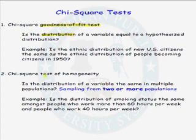The second chi-squared test is the test of homogeneity. We use this test if we want to determine whether the distribution of a variable is the same in two or more populations. In this scenario, we are sampling from two or more populations.